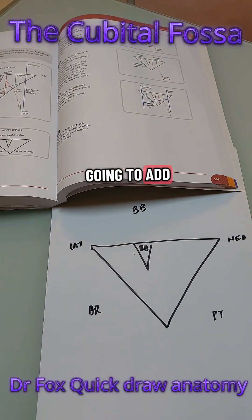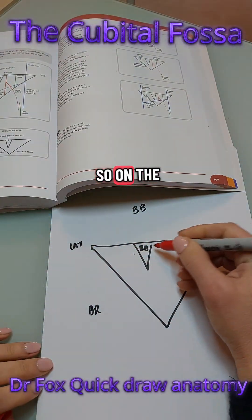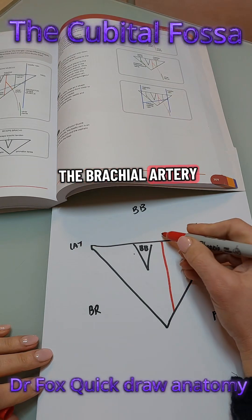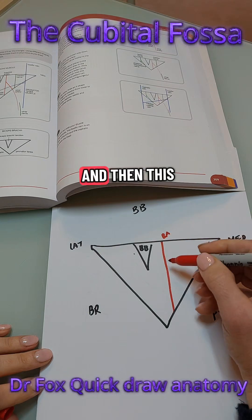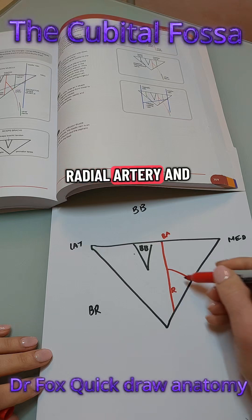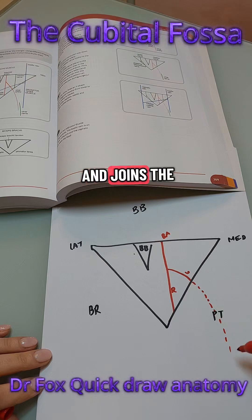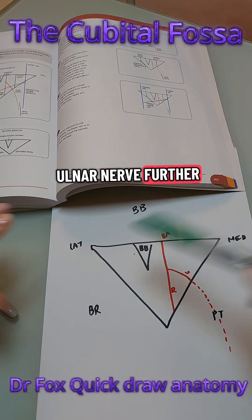The next step is we're going to add in the artery, so on the medial side of the tendon you add in the brachial artery and then this divides into the radial artery and the ulnar artery. The ulnar artery then passes deep to the muscle and joins the ulnar nerve further down in the arm.